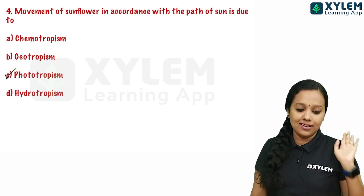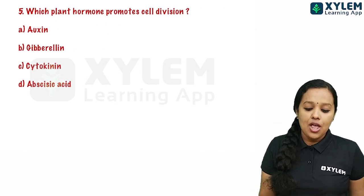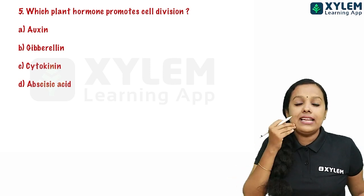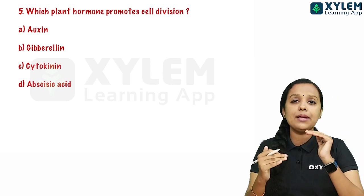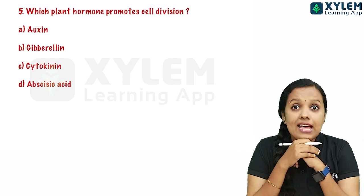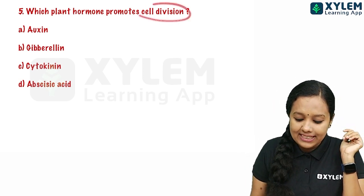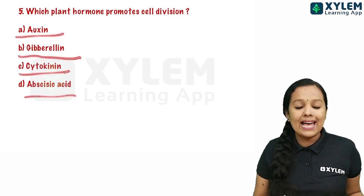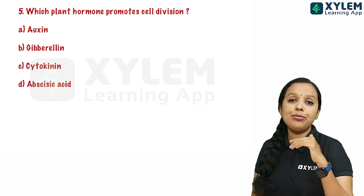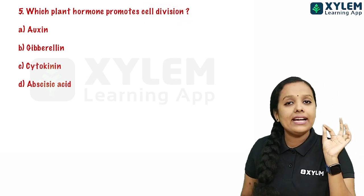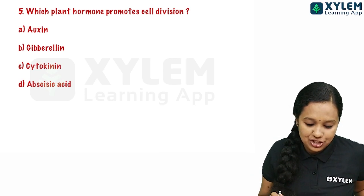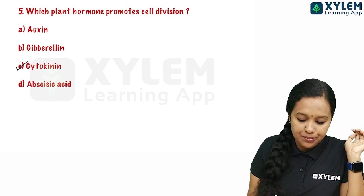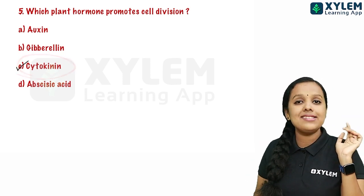The fifth question: which plant hormone promotes cell division? The options are auxins, gibberellin, cytokinin, and abscisic acid. Auxins are not for cell division. Gibberellin promotes elongation. Cytokinin promotes cell division. So Option C, cytokinin, is the correct answer.